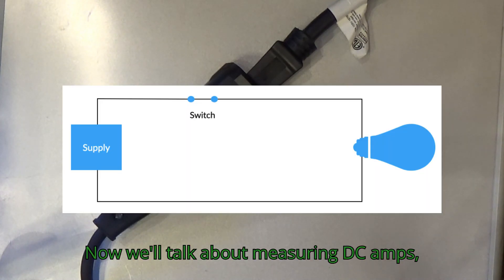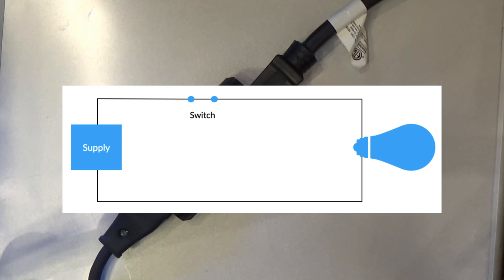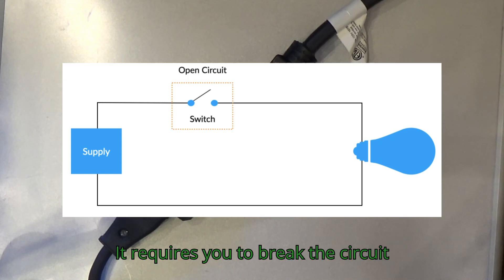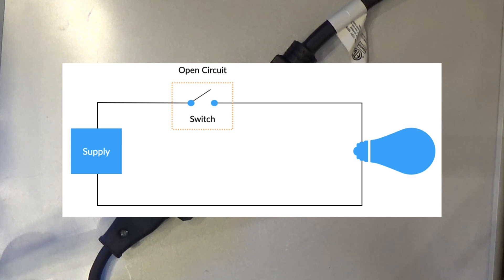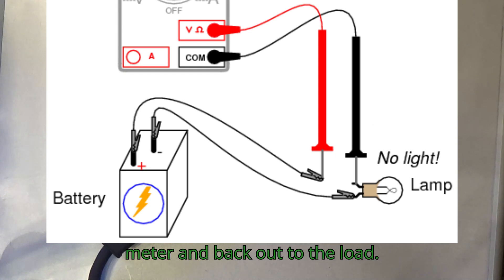Now we'll talk about measuring DC amps, which is actually the more complicated one. It requires you to break the circuit and put your meter in the circuit so that the DC current flows through the meter and back out to the load.